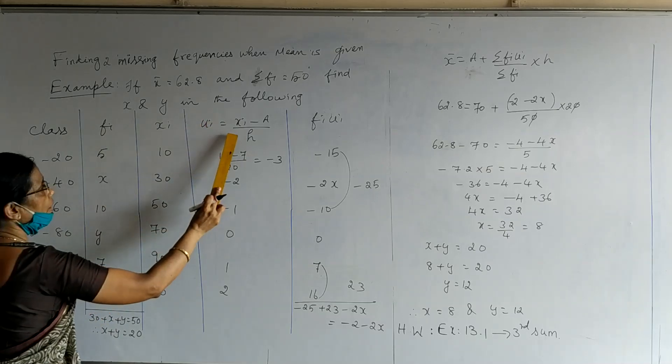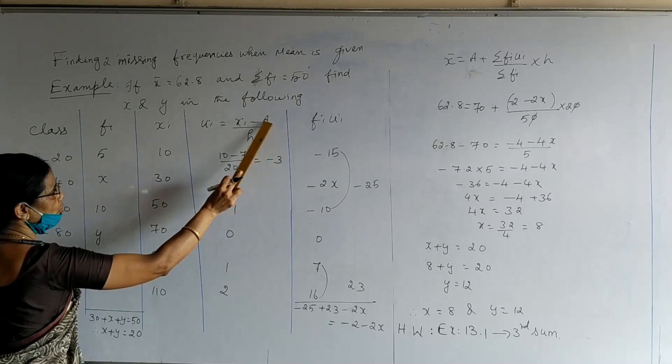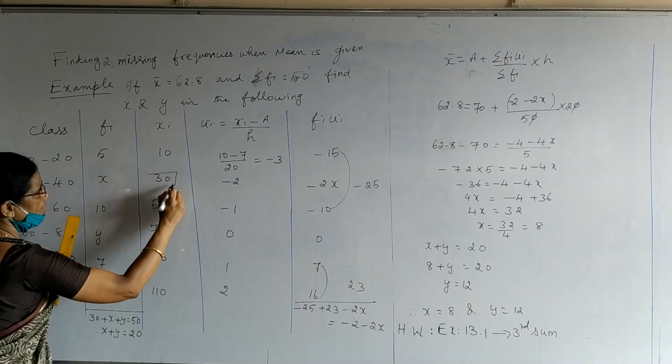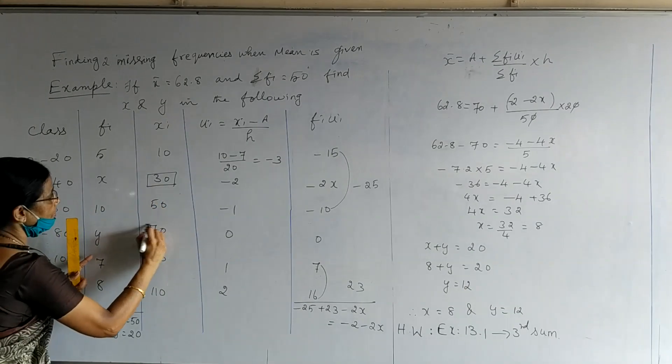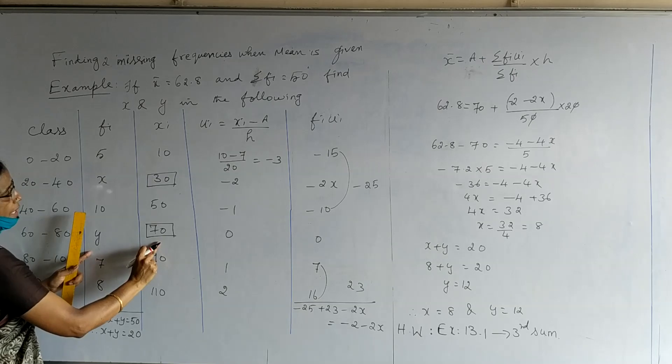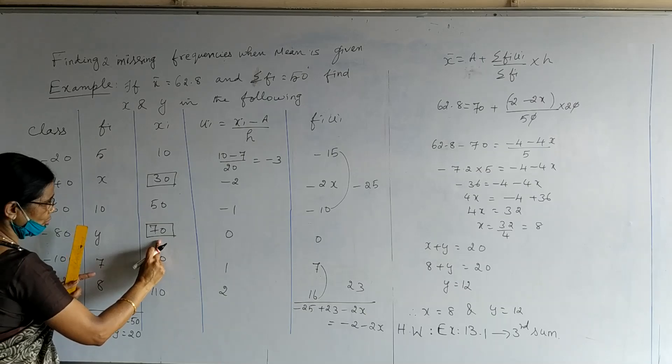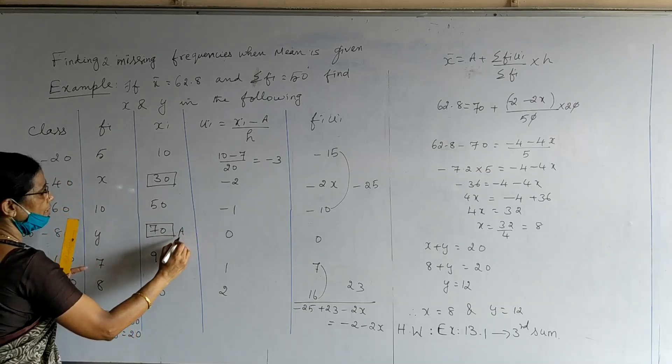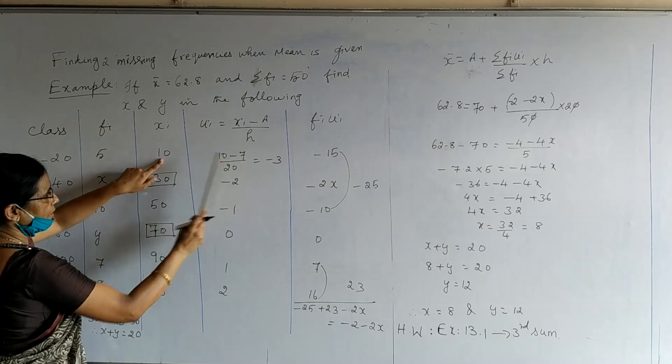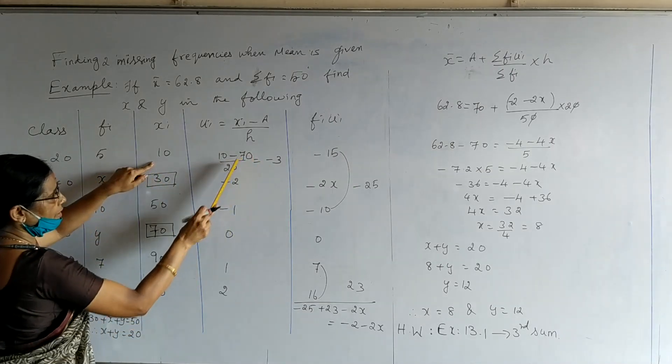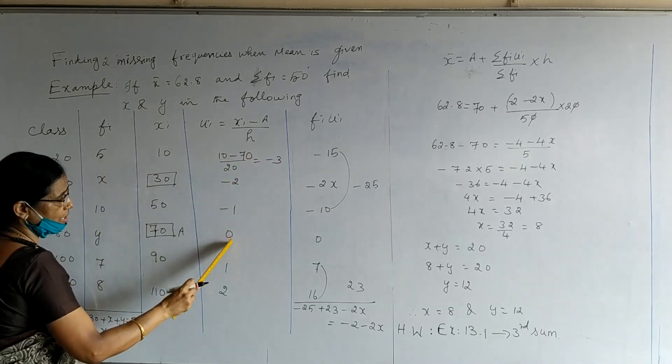ui is xi minus a upon h. a is the assumed mean. Here, there are two choices to mark assumed mean. One is, it can be corresponding xi of the missing frequency x. Otherwise, the entry corresponding to y also can be taken as the assumed mean. So, we can choose either 30 or 70 as the assumed mean. Here, I have taken assumed mean as 70. The first ui becomes xi, 10, minus assumed mean 70, divided by 20, which gives minus 3. Followed by minus 2, minus 1, 0, 1, and 2.